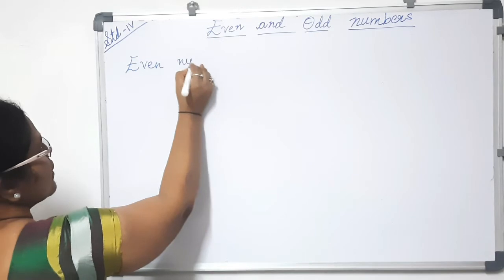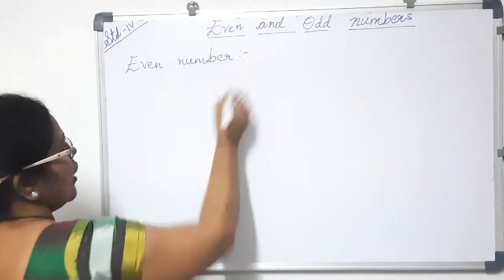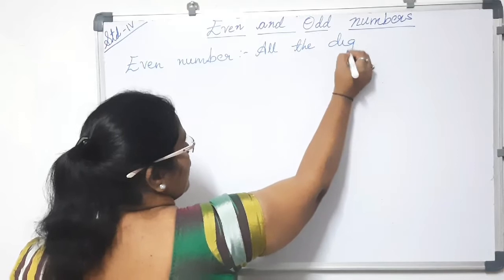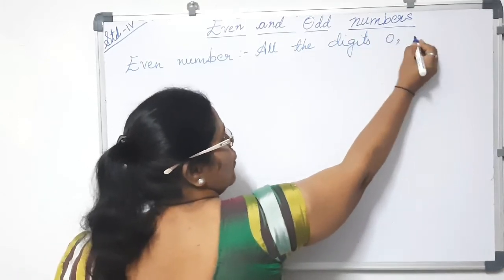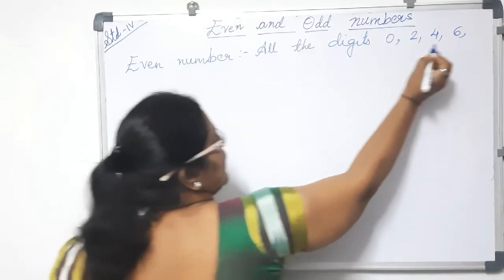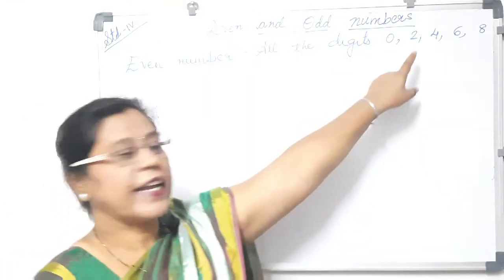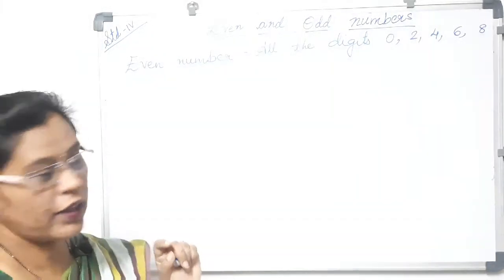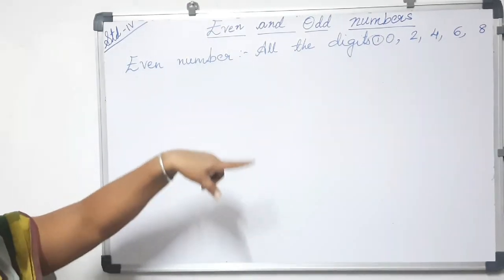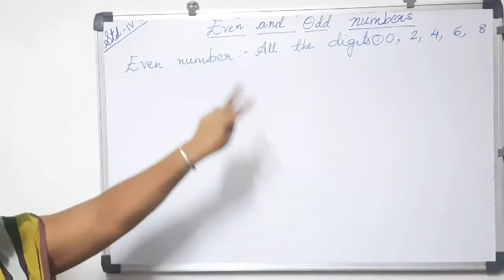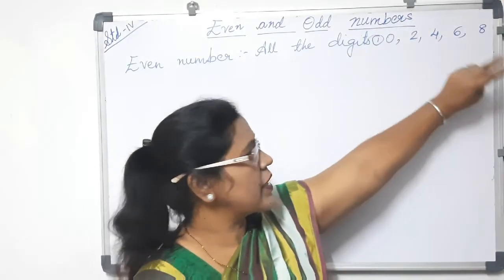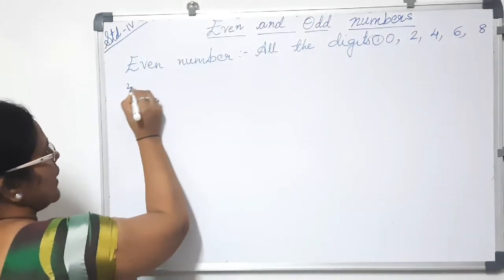Now, all the digits 0, 2, 4, 6, and 8 are called even numbers. This is the first rule you can remember — 0, 2, 4, 6, 8 are the single-digit even numbers. So you can say that 2 is an even number, 4 is an even number, 6 is an even number, and 8 is an even number.